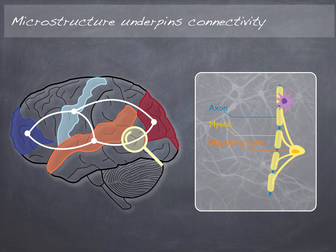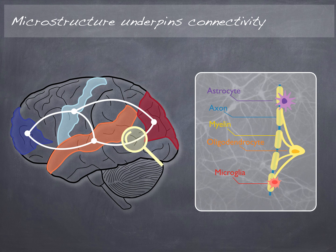Along with oligodendrocytes there are astrocytes, commonly thought of as the supporting cells of the brain, and there is also microglia — cells thought of as the garbage collectors of the brain, here to collect debris when there has been axonal injury, for example. Although we associate astrocytes and microglia as having a mundane role, they actually have much more important functions and are involved in things like memory.